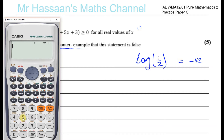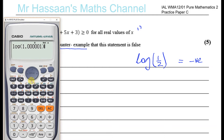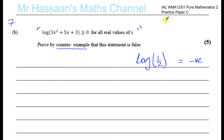If you have log of anything that's bigger than 1 — even if it's 1.00001, just slightly bigger than 1 — it's going to be positive, small but positive. And the log of 1 will always be 0. That's because the log curve is basically the inverse of the exponential curve.